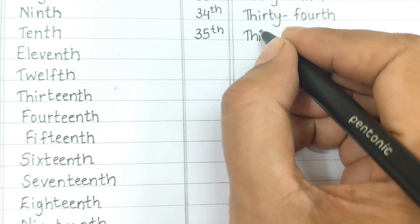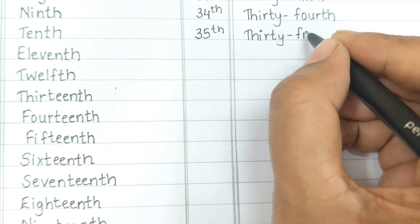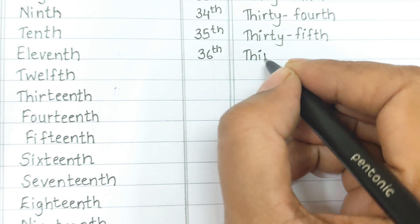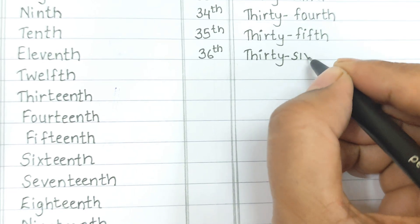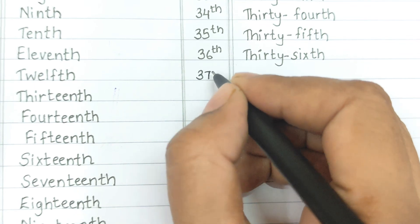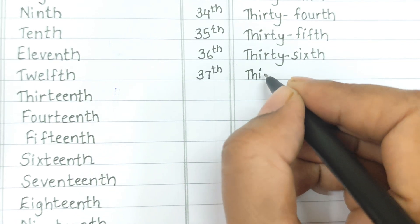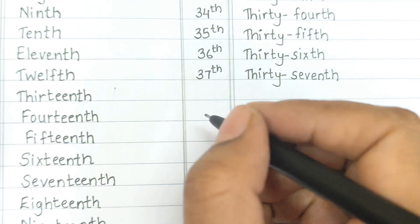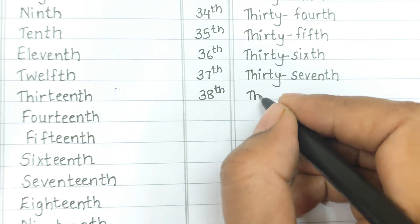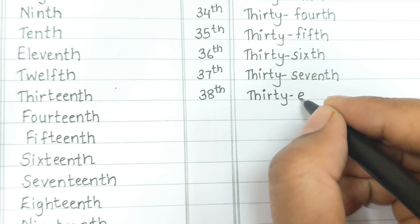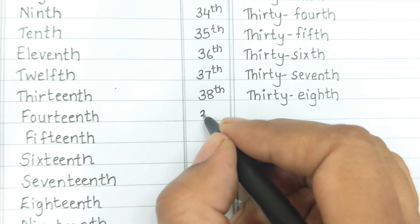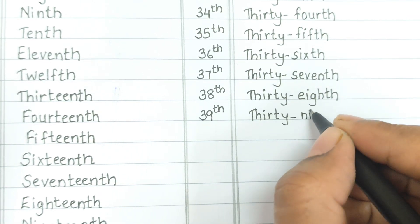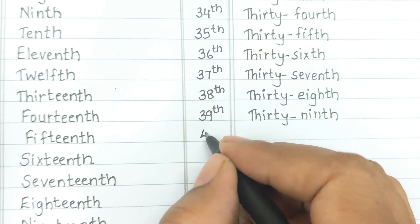Thirty-fifth: T-H-I-R-T-Y-F-I-F-T-H. Thirty-sixth: T-H-I-R-T-Y-S-I-X-T-H. Thirty-seventh: T-H-I-R-T-Y-S-E-V-E-N-T-H. Thirty-eighth: T-H-I-R-T-Y-E-I-G-H-T-H. Thirty-ninth: T-H-I-R-T-Y-N-I-N-T-H.